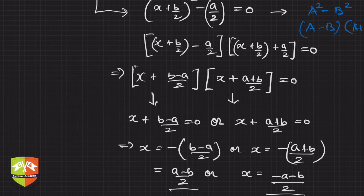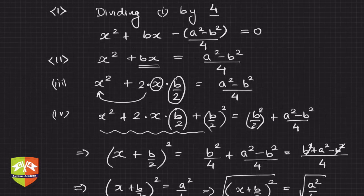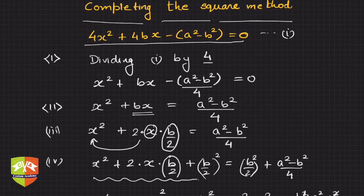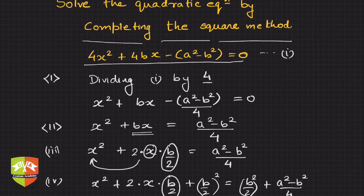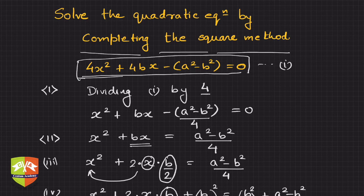So these are the two solutions of the given quadratic equation, solved using the completing the square method. The original equation was 4x² + 4bx − (a² − b²) = 0.